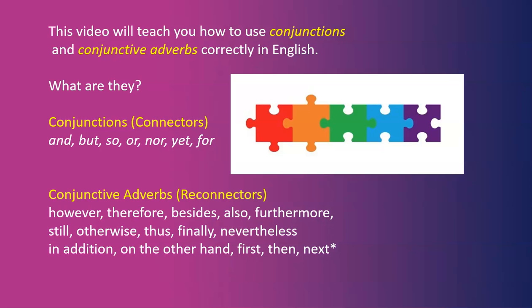What are they? Conjunctions — we're going to call them connectors: and, but, so, or, nor, yet, and for. And conjunctive adverbs — we're going to call them reconnectors: however, therefore, besides, also, furthermore, still, otherwise, thus, finally, nevertheless, in addition, on the other hand, first, then, next, and many other words like this.